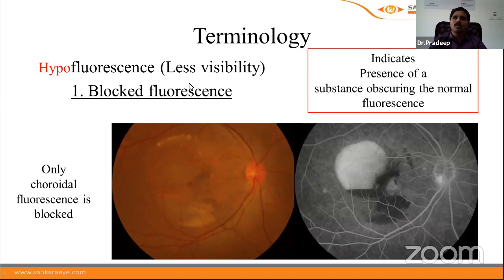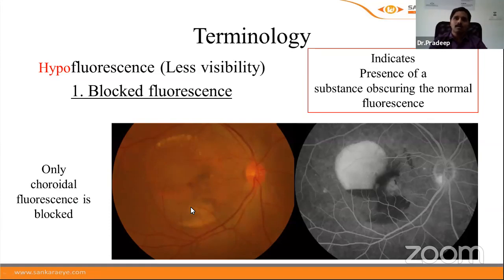Block fluorescence indicates presence of a substance obscuring the normal underlying fluorescence. There are two subtypes: one in which only the choroidal fluorescence is blocked — for example, an altered subretinal hemorrhage blocks the choroidal fluorescence but the overlying retinal vessels are still visible. This helps identify the relative location of the structure causing the block.